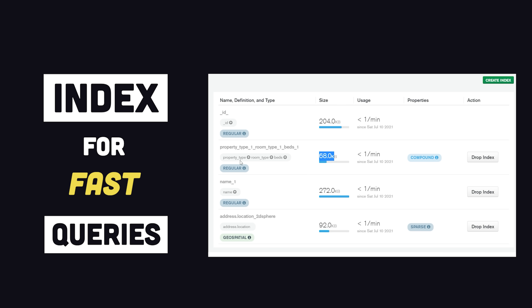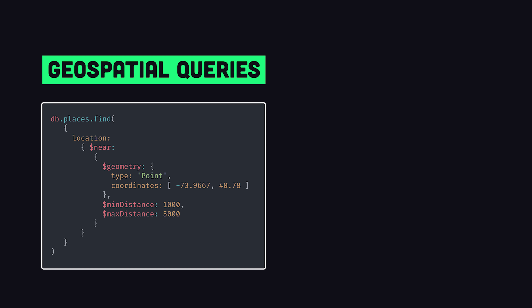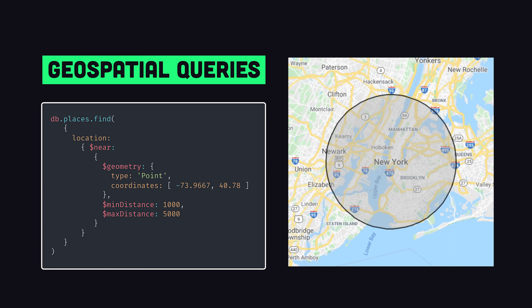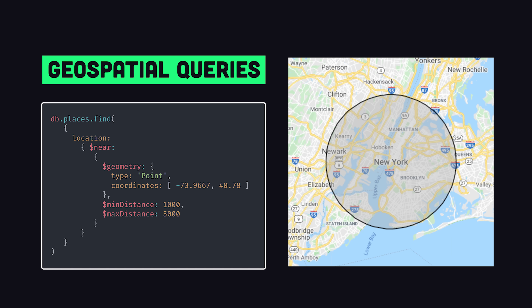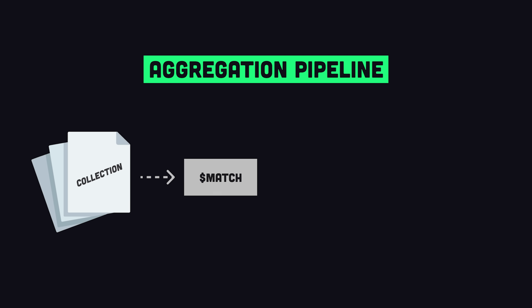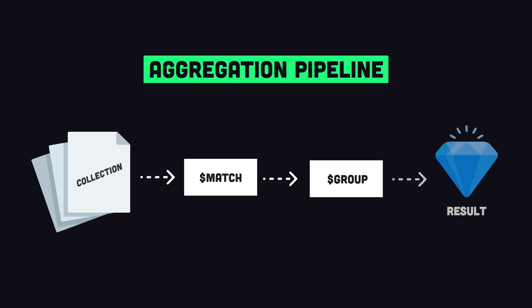To optimize performance, secondary indexes can be created to make common queries extremely fast. It also supports geospatial queries to find all the documents near a geographic location. In addition to queries, you can also create data aggregation pipelines, which can group documents together and reduce them to a single result.